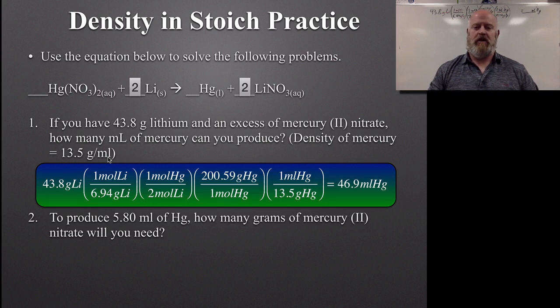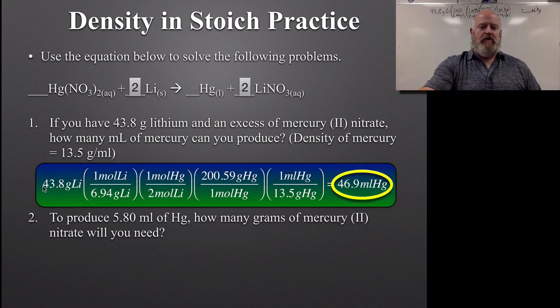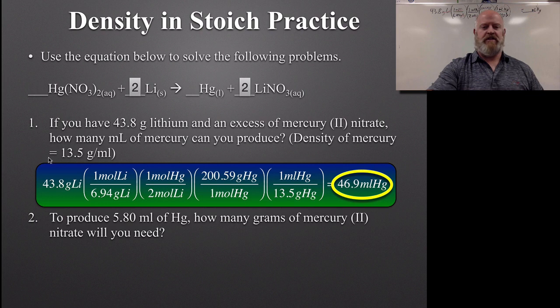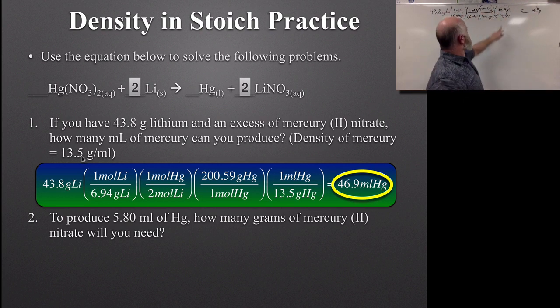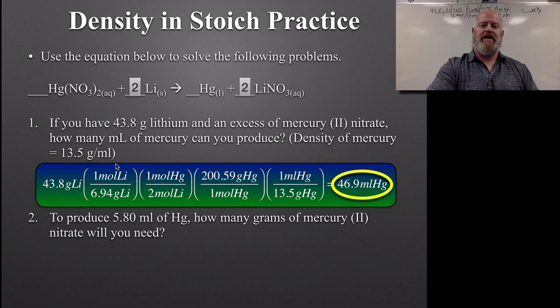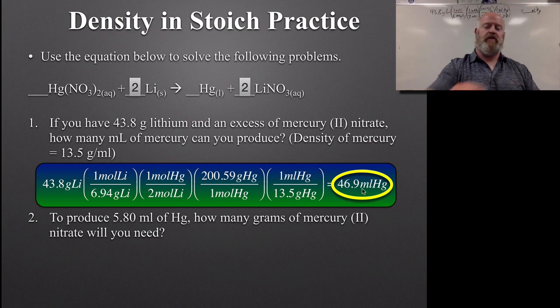Take a look at it from the screen. And sure enough, we have our 43.8, 6.94, 2 to 1, 200.59. And our density here was 13.5. I must have put a 6 in there by accident. So just 13.5 is all that we have for precision with this. Again, we have three significant figures here. Density is measured, so we have three measurements here. So both of those come back to three. So we get 46.9 milliliters of mercury.